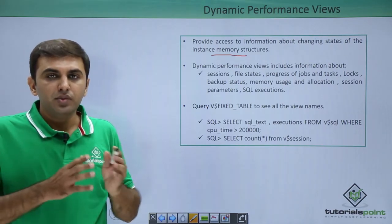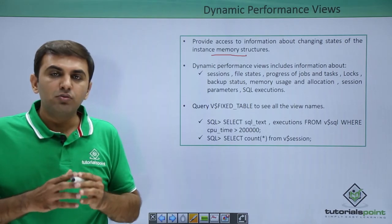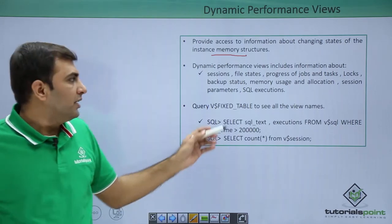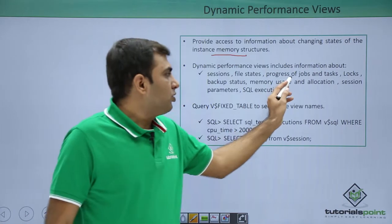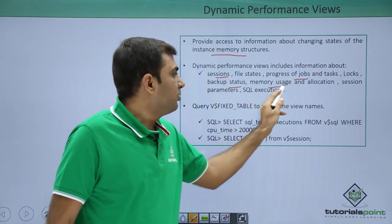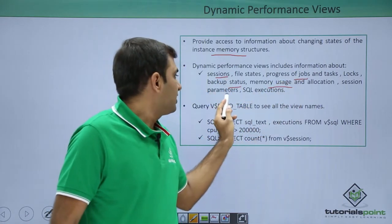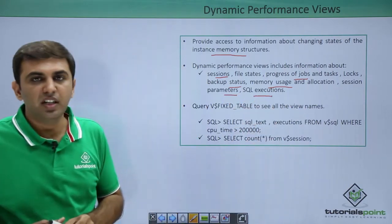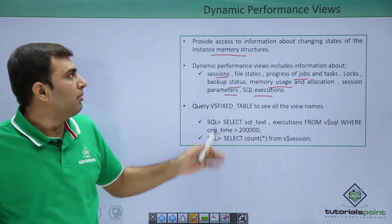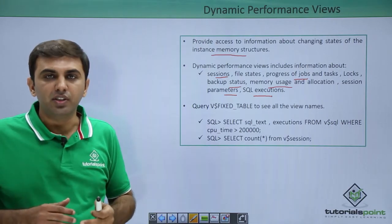For example, how many sessions are connected, whether a backup is going on and what is the status of that backup, the progress of jobs, sessions, backup status, memory usage, allocation, session parameters, and SQL execution — all this information is available under the dynamic performance view, which is always changing.